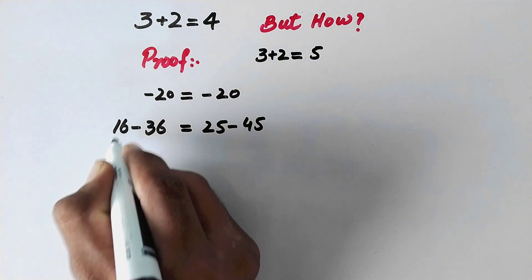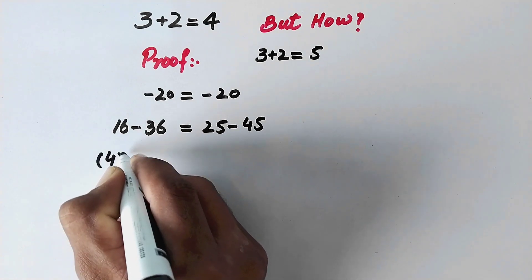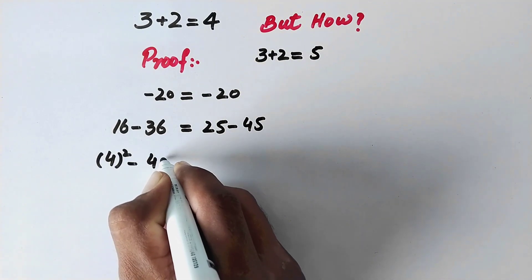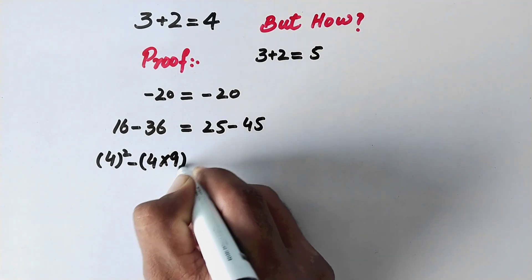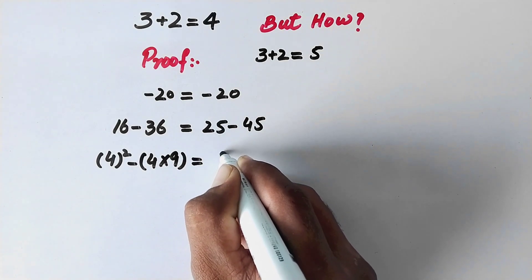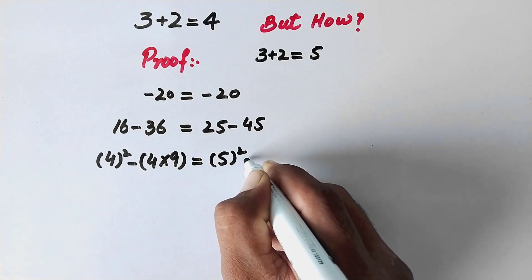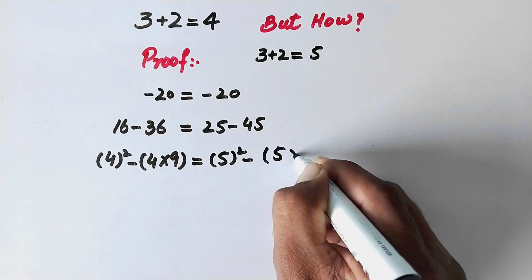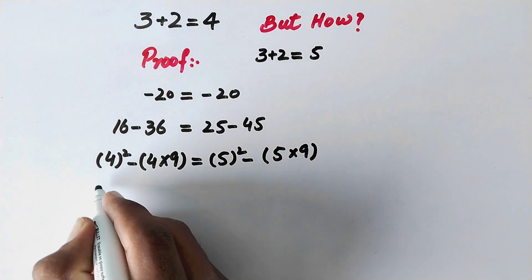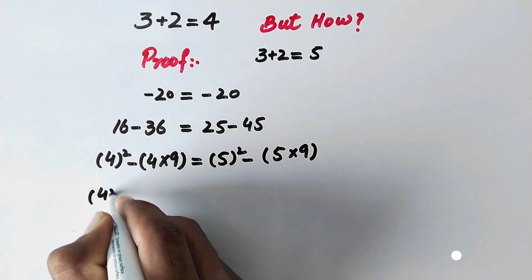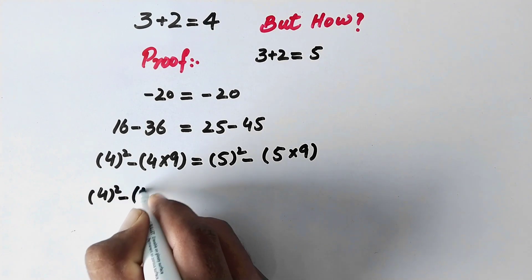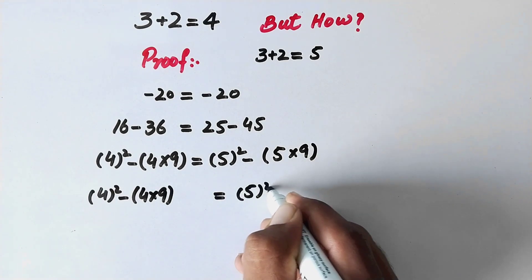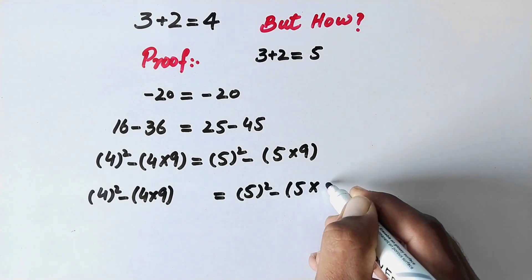And in the next step, we can write this 16 as 4 squared, minus this 36 as 4 multiplied by 9. That equals this 25 as 5 squared, minus 45 written as 5 multiplied by 9. So we can write: 4 squared minus 4 multiplied by 9 is equal to 5 squared minus 5 multiplied by 9.